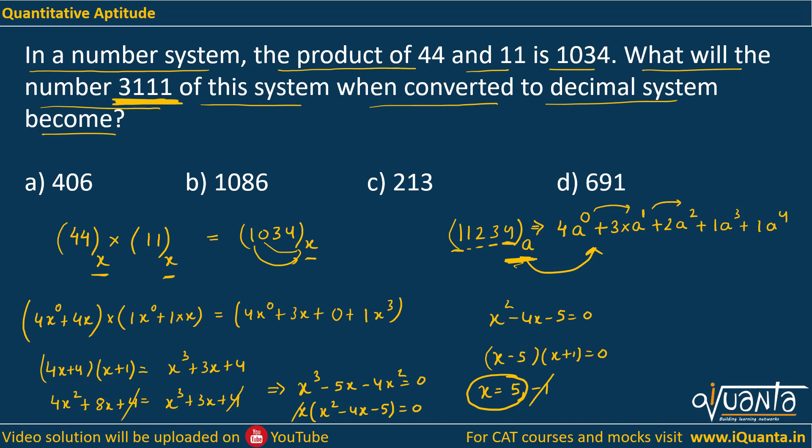Now we need to find out if 3111 in base 5 is converted to decimal what will we get. So 3111 in base 5, if we convert this to decimal, we'll be getting 1 into 5^0 plus 1 into 5^1 plus 1 into 5^2 plus 3 into 5^3.